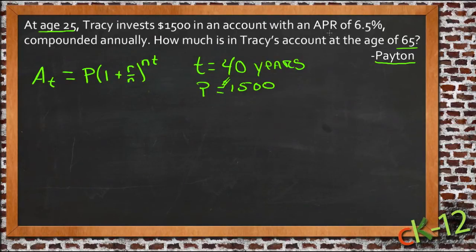Her rate, her APR is 6.5%. And the number of times it's compounded is 1. It says it's compounded annually, so one time each year. So n equals 1.